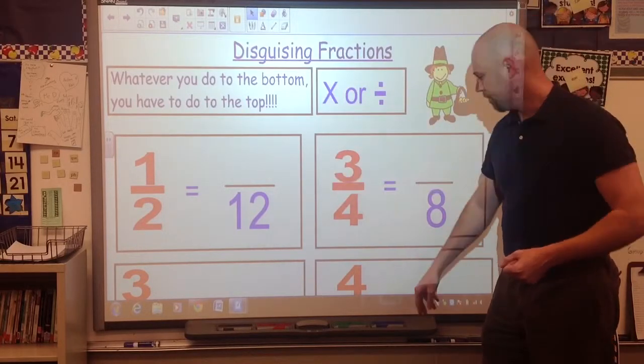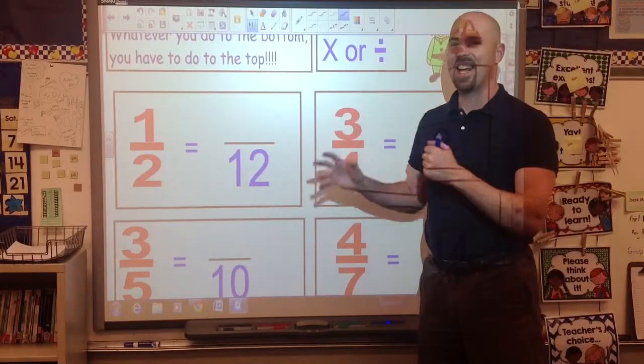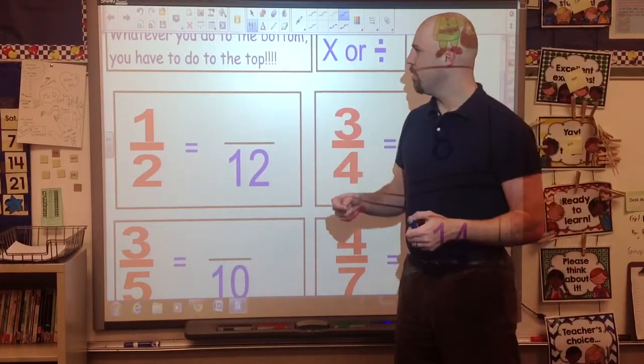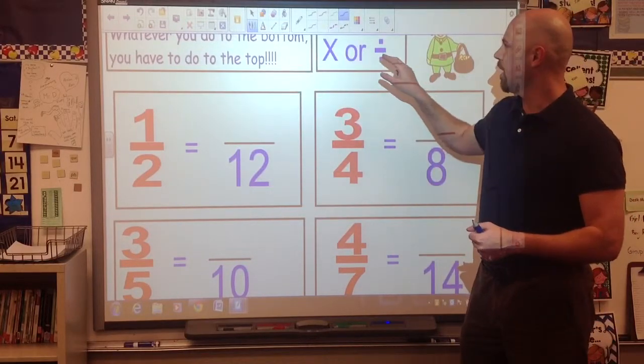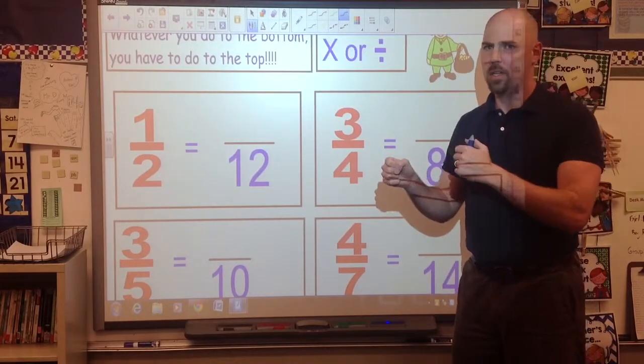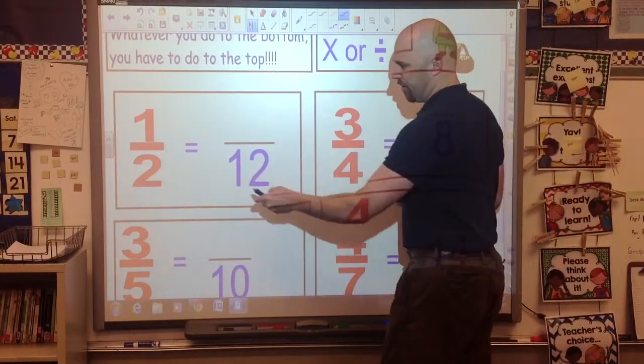So let's take a look at these fractions here. I want to turn one half, I want to put a disguise on it, and I'm going to disguise it as a twelfth. So when we do this, whatever we do to the bottom, you have to do to the top. We're going to use multiplication or division. So to put a disguise on, we multiply. To take a disguise off, we divide.